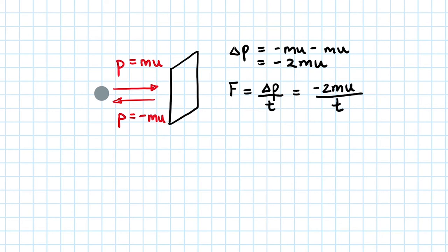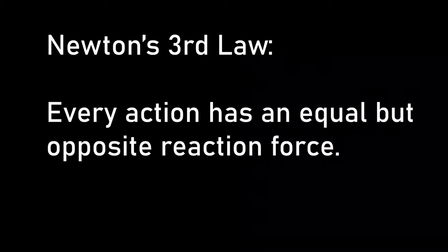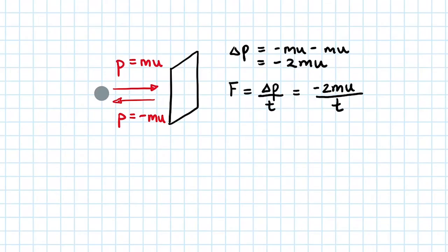But we are more interested in the force that the wall exerts on the particle. So according to Newton's third law, the wall exerts an equal but opposite force on the particle, which is just 2 mu over t, allowing us to drop the minus sign.